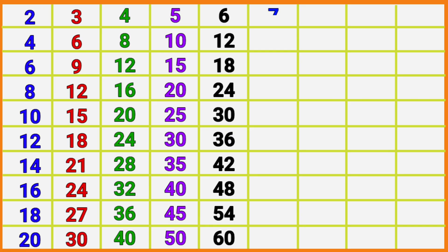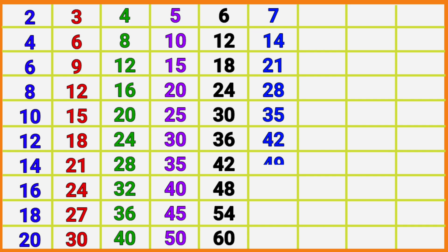7 1s are 7, 7 2s are 14, 7 3s are 21, 7 4s are 28, 7 5s are 35, 7 6s are 42, 7 7s are 49, 7 8s are 56, 7 9s are 63, 7 10s are 70.